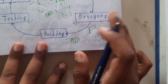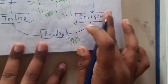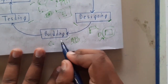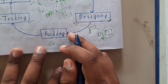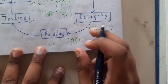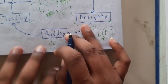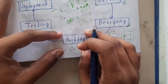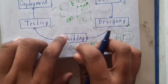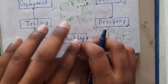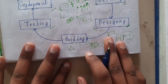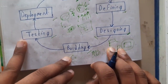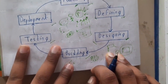Once the designing phase is done, you'll move to building — which is the coding stage. You'll be coding the whole project and finishing it in this stage. Once the project is complete, you will do some small tests to check whether the program is working properly. Then you'll go through the formal testing stage, which is the fifth stage.